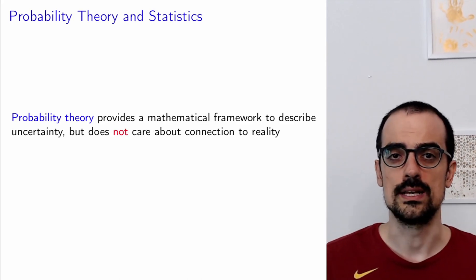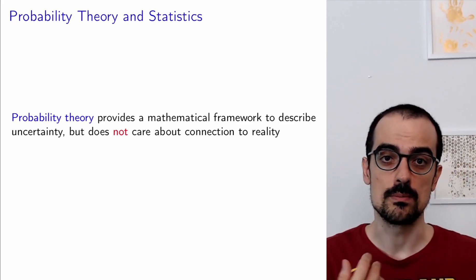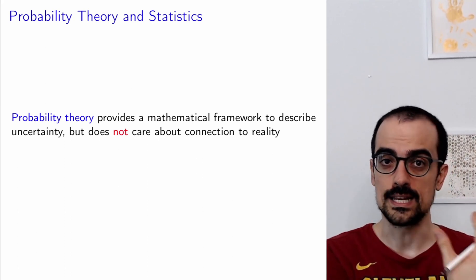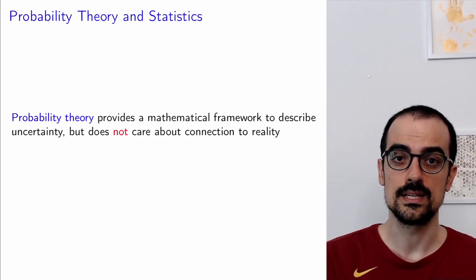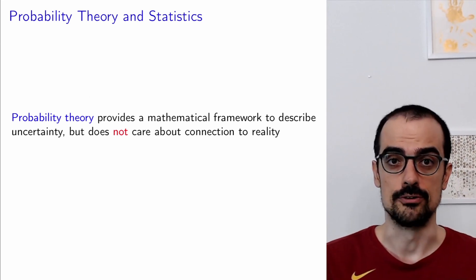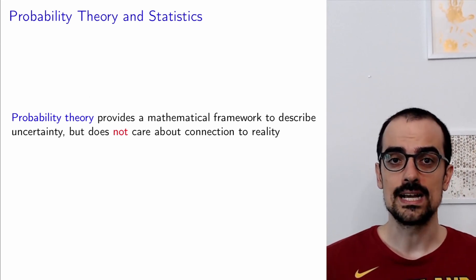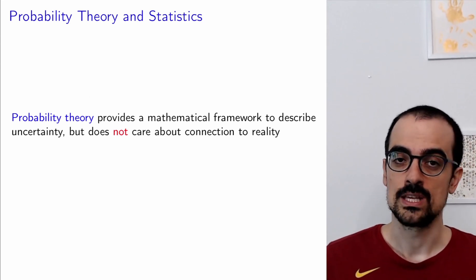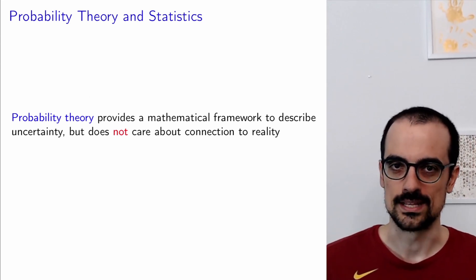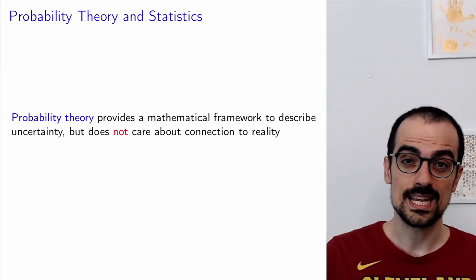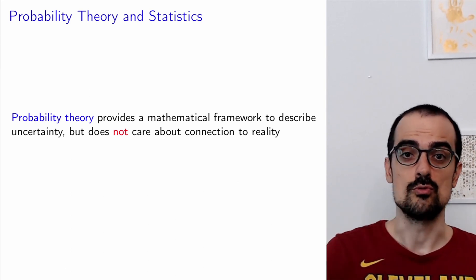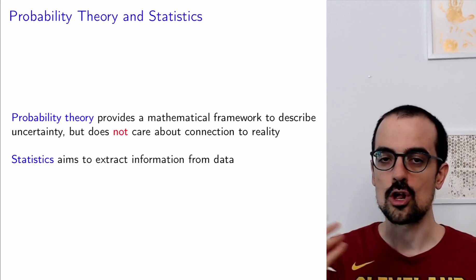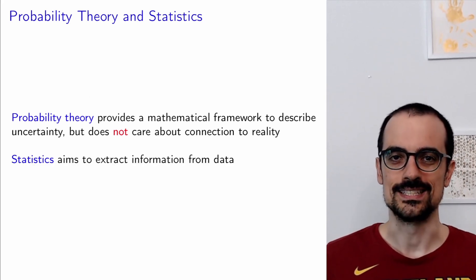This is a good moment to explain the distinction between probability theory and statistics. What we've been doing up to now — defining probability, defining conditional probability, and so on — that's probability theory. Probability theory provides a mathematical framework that allows us to describe uncertainty in a mathematically consistent way, but it does not care at all about connection to reality. In contrast, statistics is all about the connection to reality.